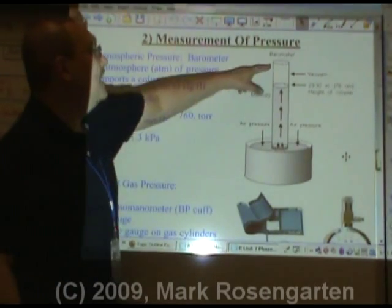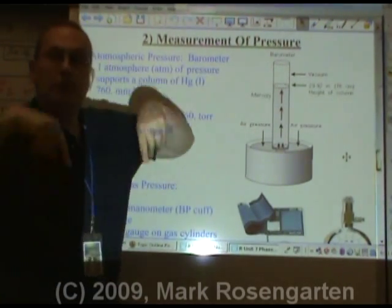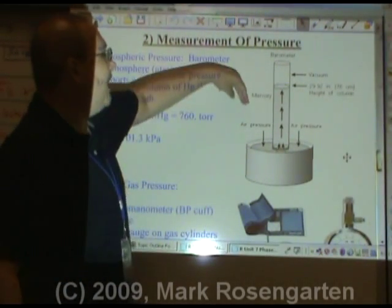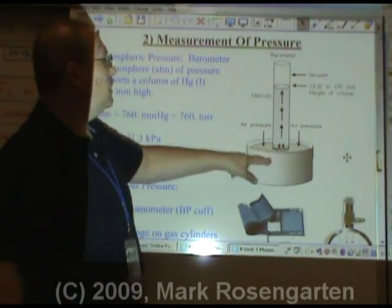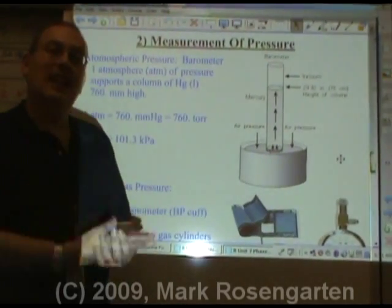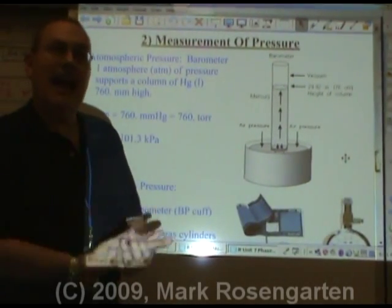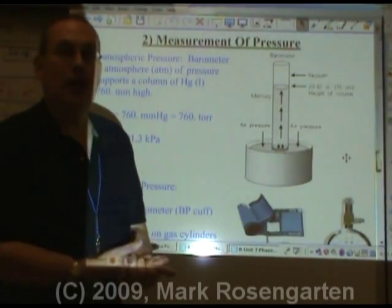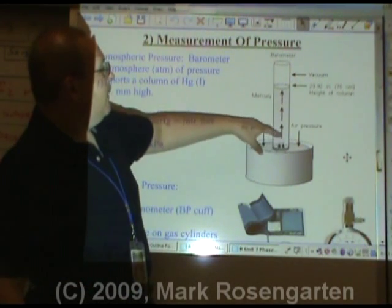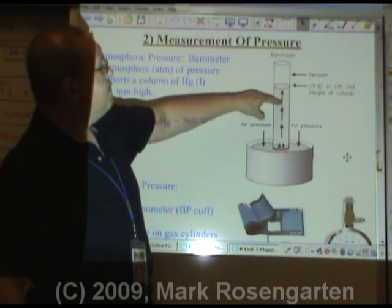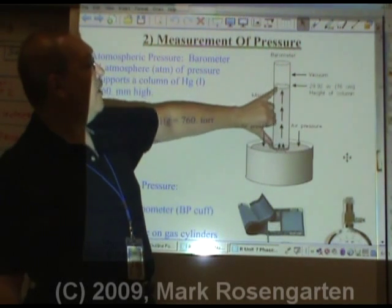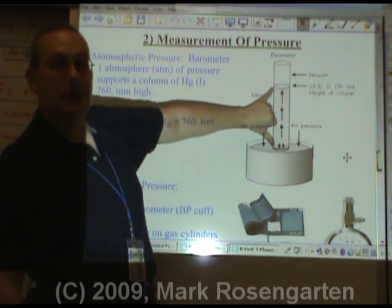Why does the mercury go up? Because there's nothing in the tube to push back — the mercury's path of least resistance is to go up the tube. A standard atmospheric pressure is enough to push the mercury up 29.92 inches high; that's how high the column of mercury in this tube will be.